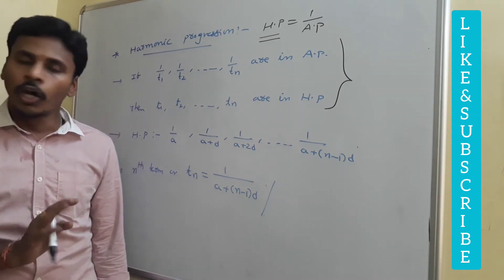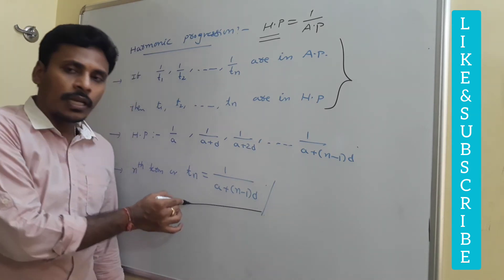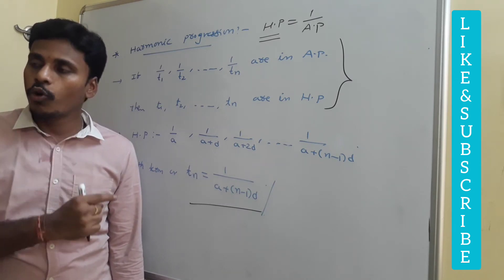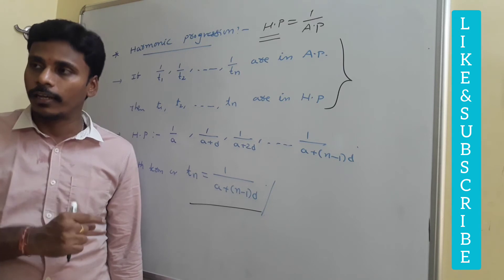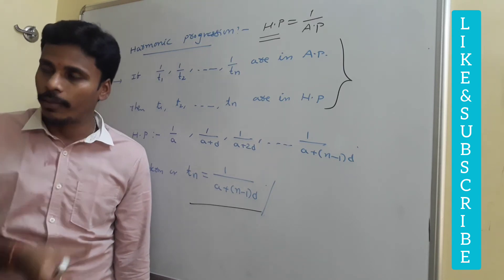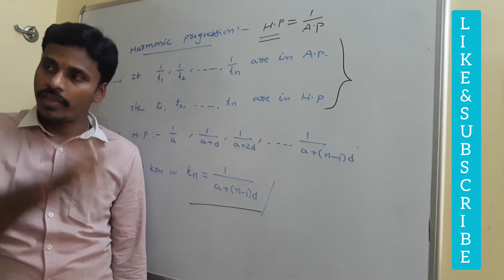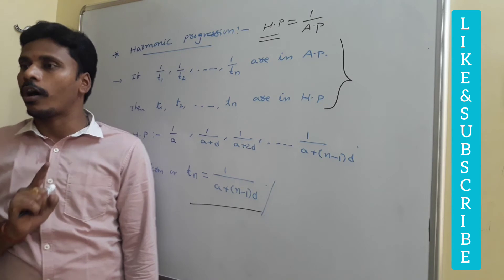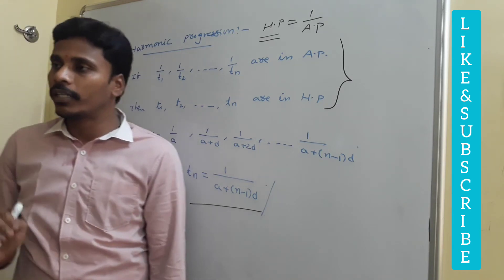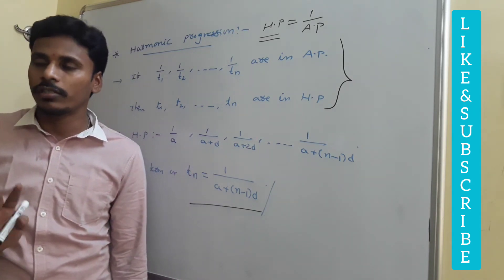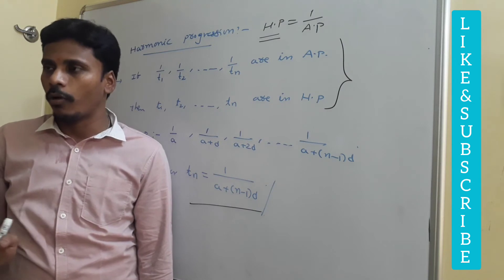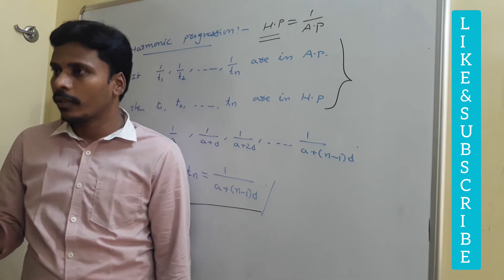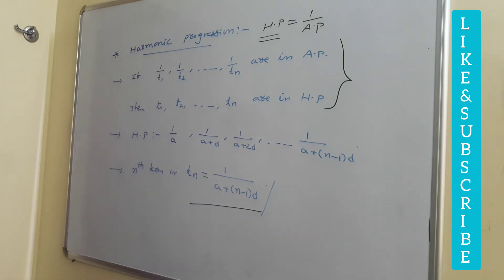For harmonic progression, there is no need to memorize the nth term formula and no need to discuss sum of nth terms. If you wish to find the nth term, just convert the given sequence into arithmetic progression, find the nth term there, and then reciprocal to get the nth term of harmonic progression — that's enough. For the sum of nth terms of harmonic progression, we don't have any direct formula; according to the problem, we need to solve accordingly.